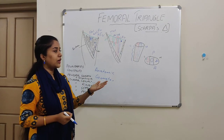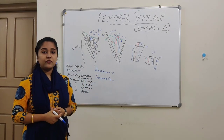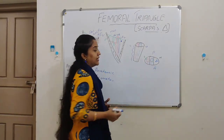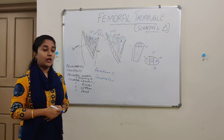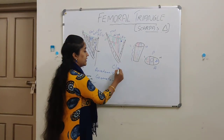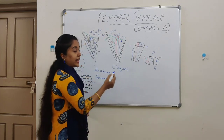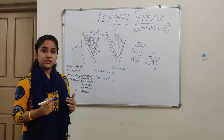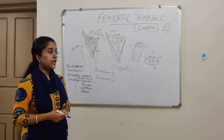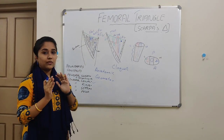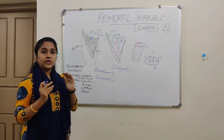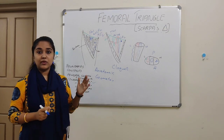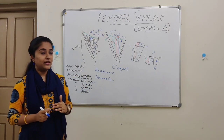The importance of the femoral canal: since it is an empty space, it has the deep inguinal lymph node of Cloquet. It also provides space for the femoral vein to expand during increased venous return, and it is the most common area for femoral hernia to occur. That's all about the three important aspects of the femoral canal.